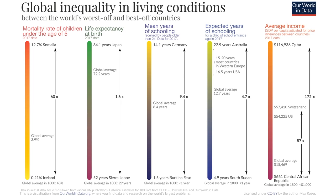The second bar shows life expectancy at birth based on 2017 data. The distance is shown between Sierra Leone and Japan — Japan has the highest life expectancy at birth at 84.1 years, and Sierra Leone the lowest at 52 years. It is 1.6 times more likely in Japan for an average person to live to 84 years. The global average is about 72.2 years, and the Indian average is also close to the global average. Interestingly, the global average life expectancy at birth in 1800 was just 29 years.